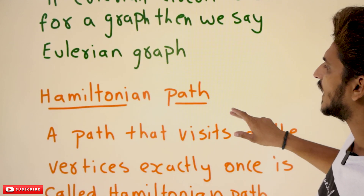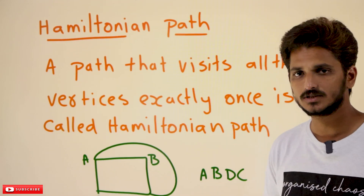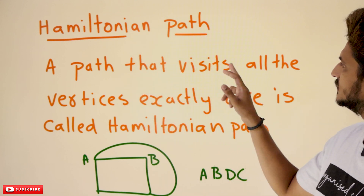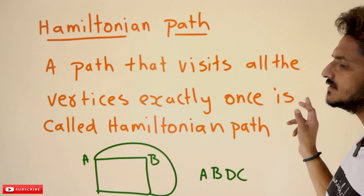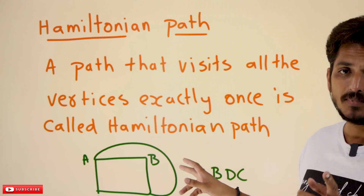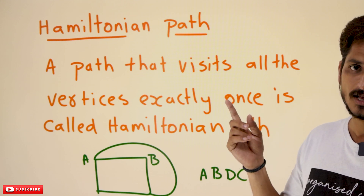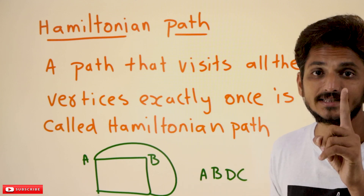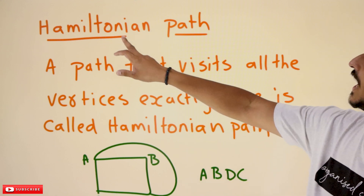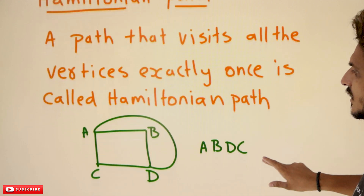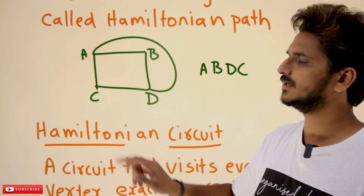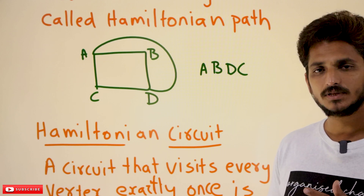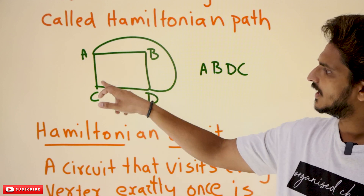Now coming to the next one: Hamiltonian path. We need to understand the Hamiltonian graph similarly. A path that visits all the vertices exactly once is called a Hamiltonian path. In the Eulerian graph above, you visit all the edges; here you visit all the vertices exactly once — then we say it is a Hamiltonian path. Take a simple graph A, B, D, C — yes, Hamiltonian path exists. We covered all the vertices exactly once. Path means starting and ending should be different: A to C.